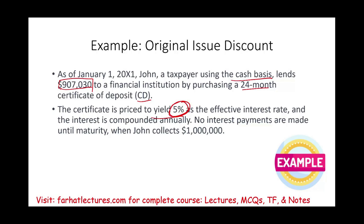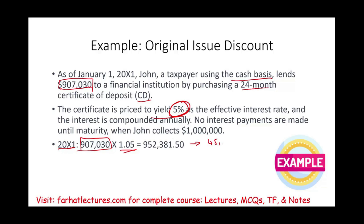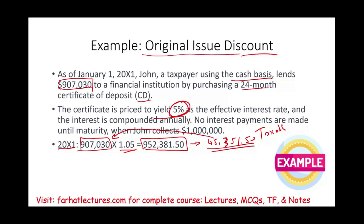This deal yields John 5%. In year one, this money will grow at 1.05 — the original amount plus 5%. So if we take $907,030 times 5%, John earned in the first year $45,351.50. This money was added to the original amount, and by the end of year one, John will have $952,381. Now this number is in John's bank account, but John cannot take this money until the end of the term. Yet this $45,351.50 is taxable — this is a form of original issue discount.